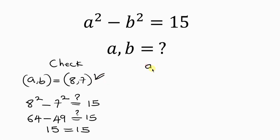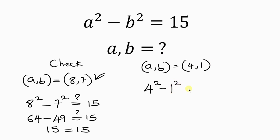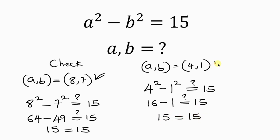Now let's check when A equals 4 and B equals 1: 4 squared minus 1 squared equals 16 minus 1, which equals 15. The left-hand side equals the right-hand side, so this answer is also correct. Therefore, the values of A and B are 8 and 7, and 4 and 1.